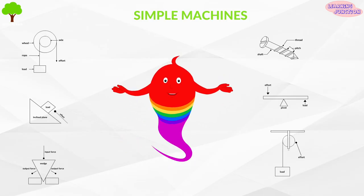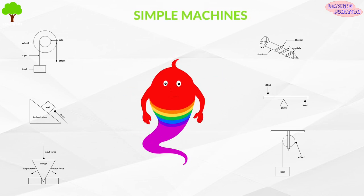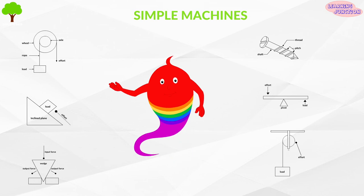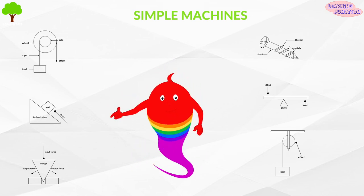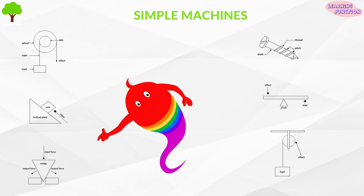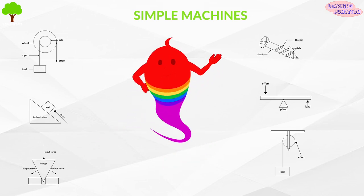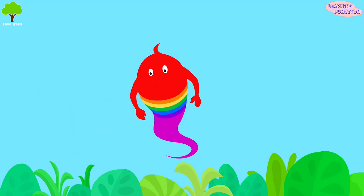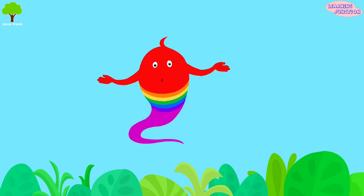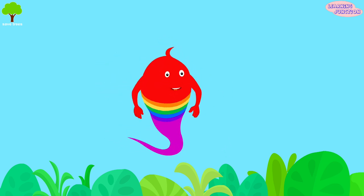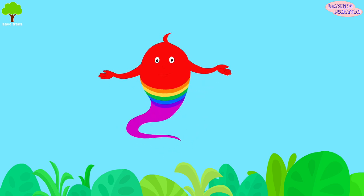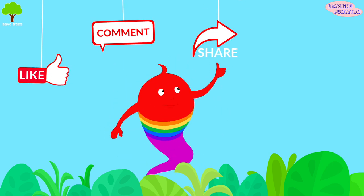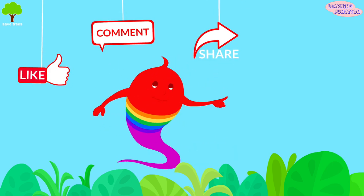Here's a chart of various simple machines: wheel and axle, inclined plane, wedge, screw, lever, and pulley. Now you know a lot about simple machines! Please drop a like, leave a comment, share the videos, and don't forget to subscribe.